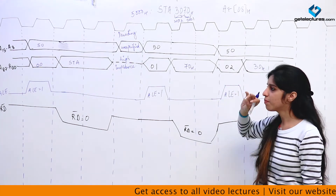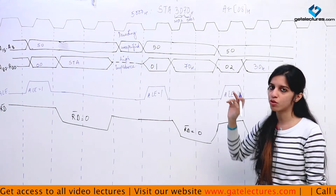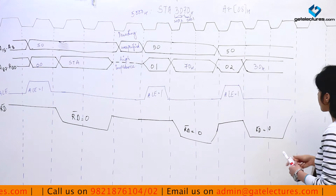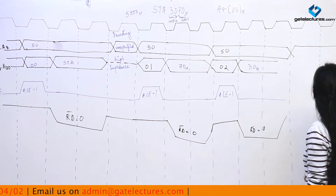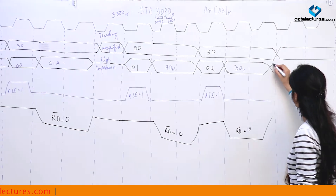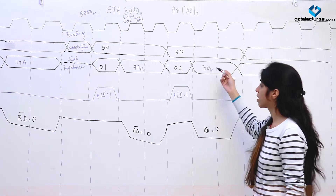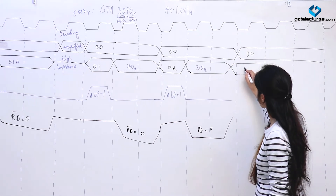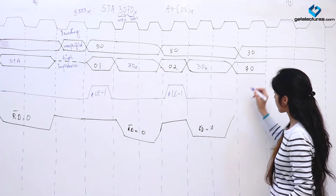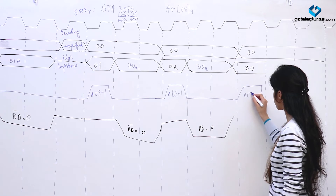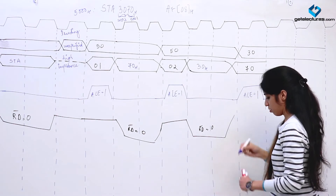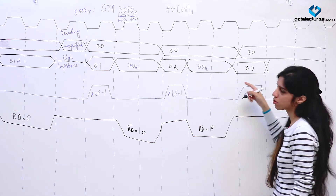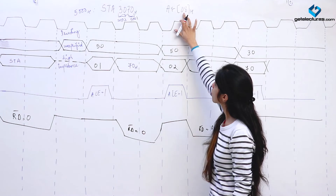Now the microprocessor knows the instruction — the contents of the accumulator are to be stored — and we also have the memory location 3070. Now what we do is PC is going to be overwritten with this memory location; 3070 is going to be loaded and we reach that location and write the contents of the accumulator there. In the next cycle, the upper 8 bits of the address line are going to hold 30 and the lower bits are going to hold 70. For this to act as the address bus, I am enabling the Address Latch Enable.